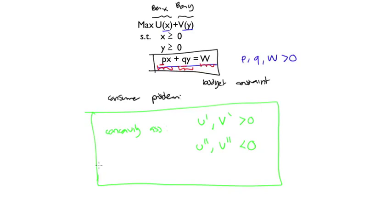These concavity assumptions are going to generate the existence of unique solutions, in the same spirit as what we have seen before. Let me conclude this introduction with a comment about how this material relates to more advanced courses. It is possible — as you learn in first-year graduate economics — to solve this problem for any number of goods, not only two. That requires more general optimization principles like Lagrange multipliers. One of the neat things about the two-good model is that we can get most of the economic intuition from those more general models without using those advanced techniques.